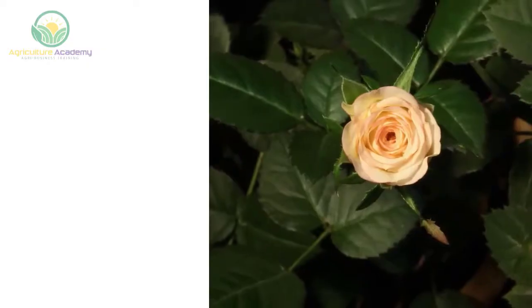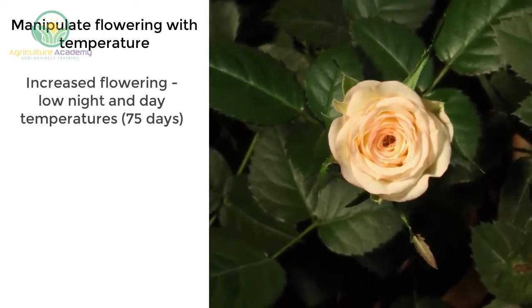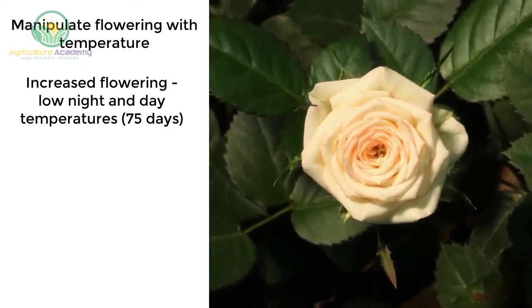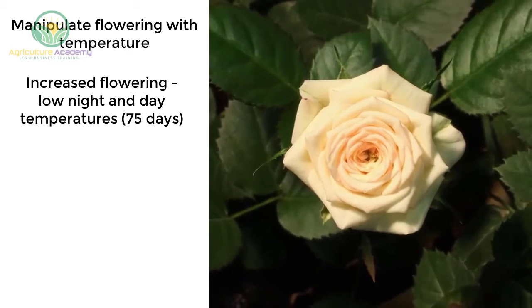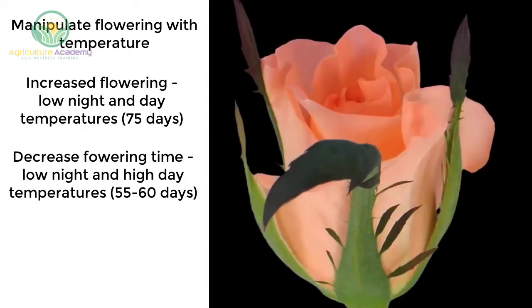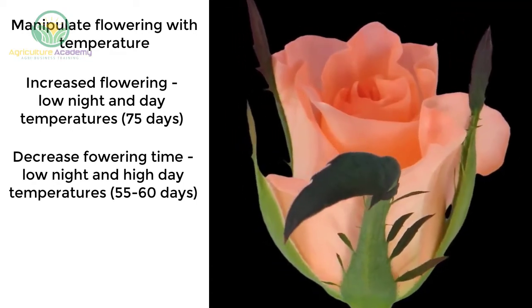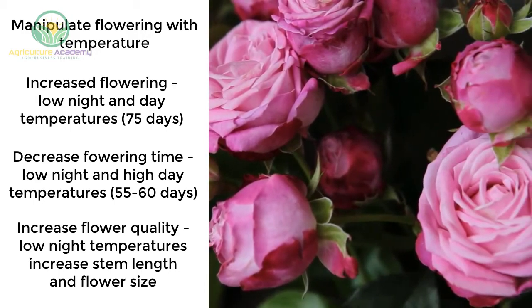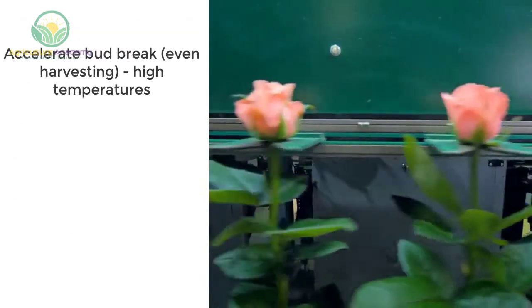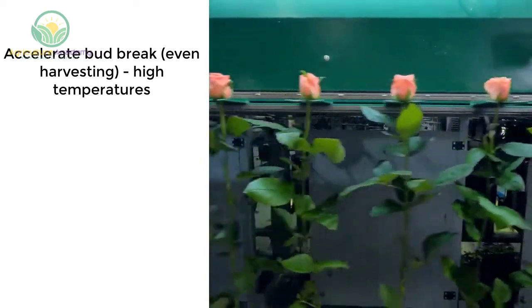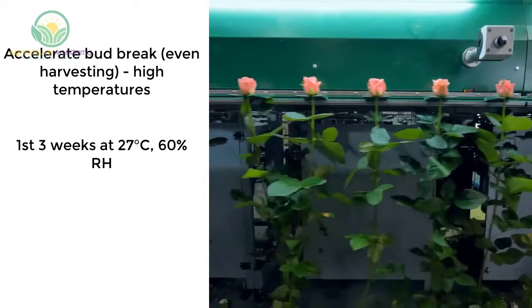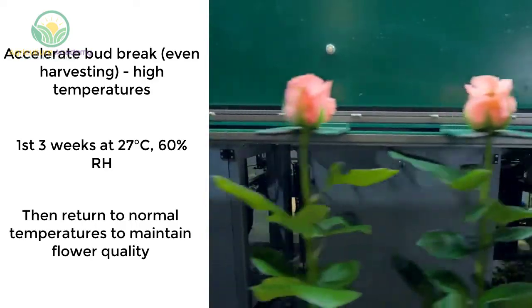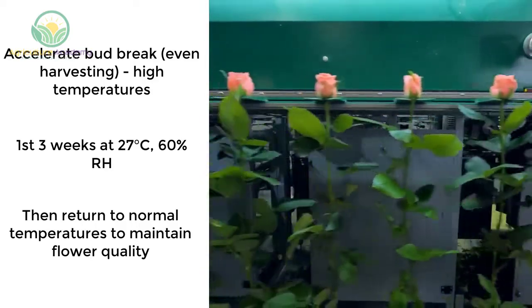Manipulation. Rose growth can be manipulated by temperature. Flowering time is increased by maintaining low night temperatures of 10 degrees Celsius and low day temperatures, with flowering taking up to 75 days under these conditions. Low night and high day temperatures will decrease the flowering time to 55 to 60 days. Cool nights maximize flower quality by increasing stem length and flower size. To harvest all flowers at a single time, bud break can be accelerated by high temperatures, keeping the first three weeks at 27 degrees Celsius with 60% humidity. Temperatures should return to normal after this to maintain flower quality.